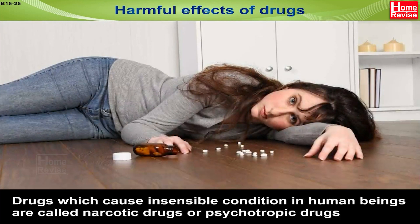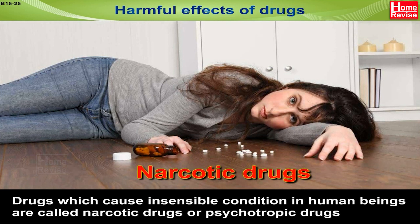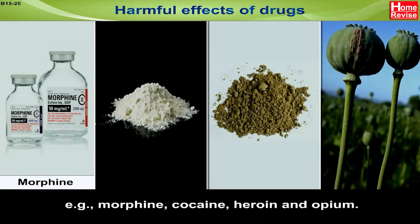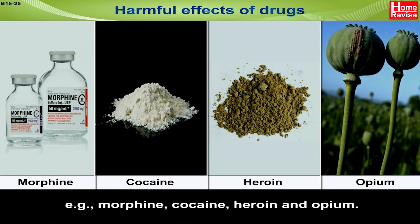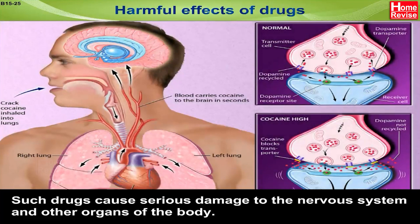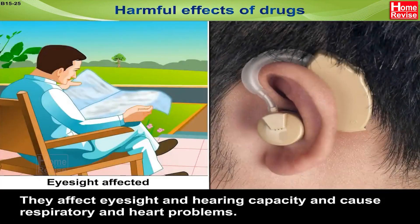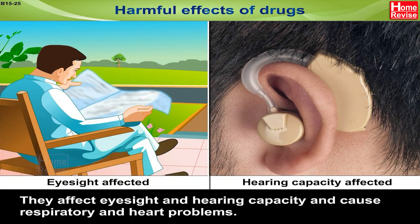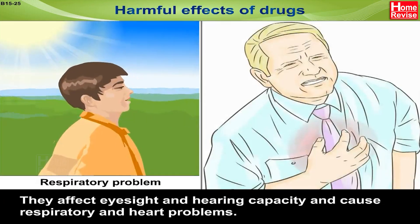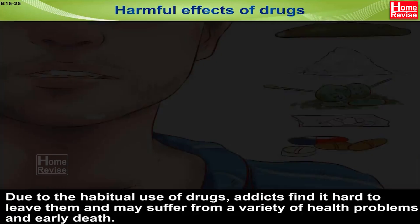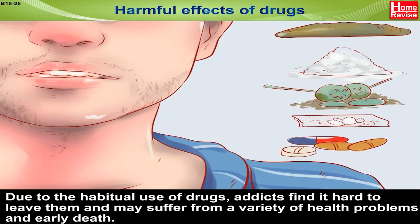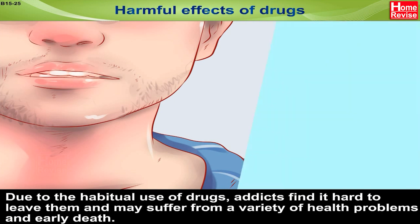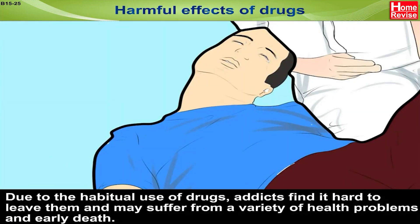Harmful effects of drugs: drugs which cause an insensible condition in human beings are called narcotic drugs or psychotropic drugs. Examples include morphine, cocaine, heroin and opium. Such drugs cause serious damage to the nervous system and other organs of the body. They affect eyesight and hearing capacity and cause respiratory and heart problems. Due to the habitual use of drugs, addicts find it hard to leave them and may suffer from a variety of health problems and early death.